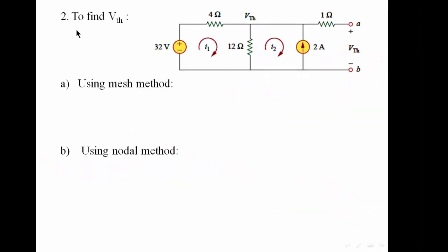Now we are going to find the Thevenin's voltage, or V-Thevenin. V-Thevenin is the open circuit voltage in the location of the removed load. We can simply cancel this resistance because there is no current flowing in it, because this terminal is an open circuit. We can see that V-Thevenin is parallel to the voltage here, and that's why we call the voltage here V-Thevenin. This means that we need to find the voltage in this resistance, or the V-Thevenin.